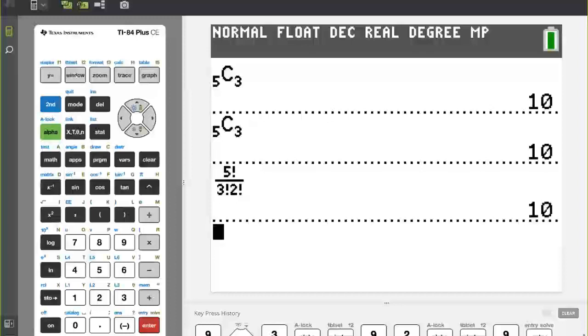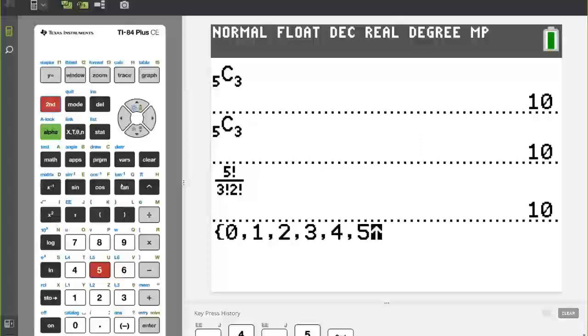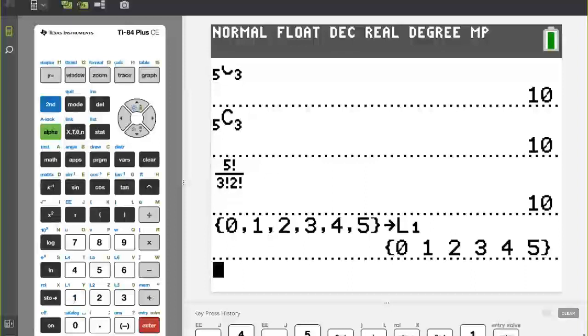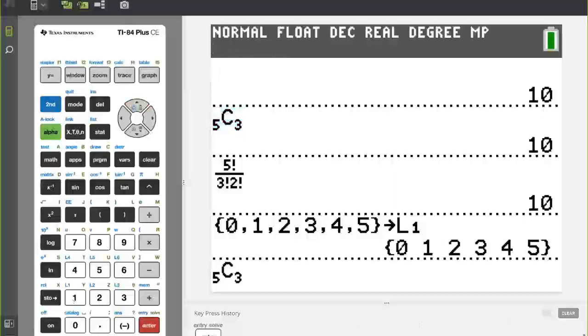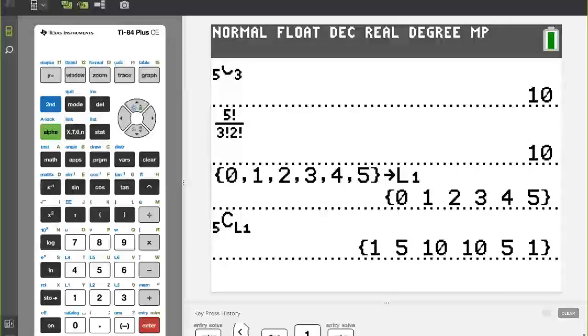And I'm going to show you here another useful thing. Using list commands, I can actually generate a list of the values for row 5, or the numbers, 0, 1. Notice I'm going second bracket, and I can send this list, or store it, as list 1. There we go, 0 through to 5. Now I can do my NCR command again. I'm going to save time, and arrow up to collect it. And instead of going 5c3, which will find one individual element, I'm now going to go for 5c list 1. Watch this. And there we have row 5 of Pascal's triangle.